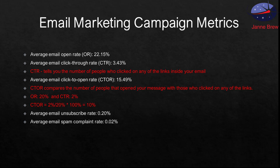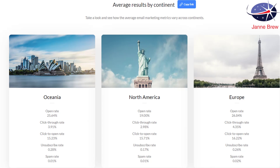The average email unsubscribe rate is low at 0.2%, which is 2 in a thousand. The average email spam complaint rate is about 2 in 10,000. These are the averages right across the industry and give you a basis for comparison. As you can see, the rates vary between Oceania — which includes Australia — North America, and Europe, with much higher open rates for Oceania and Europe compared to North America. This is why we always say take care when using averages.